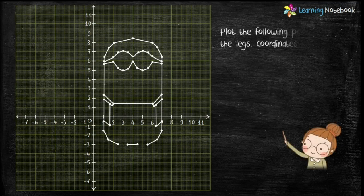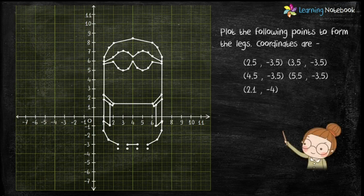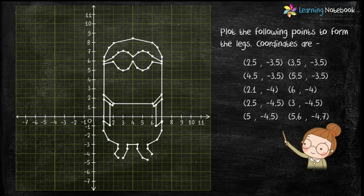Now let's plot the following points to form the legs of the minion. The coordinates are here. Join these plotted points to complete the legs.